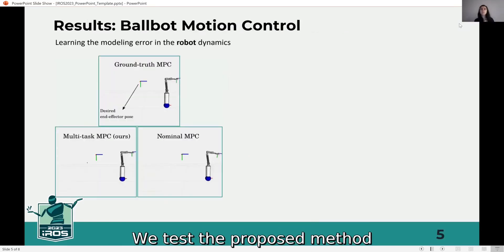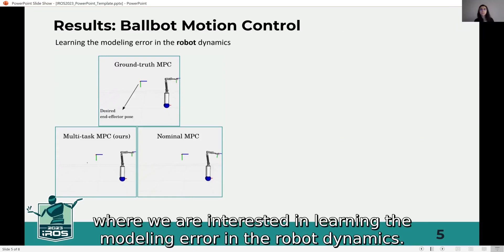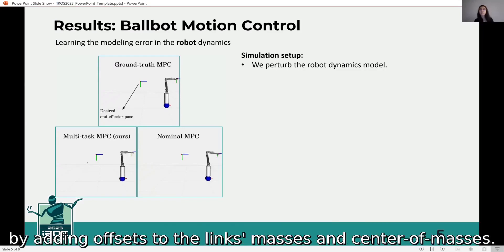We test the proposed method in the motion control problem of a ballbot, where we are interested in learning the modeling error in the robot dynamics. In our simulation setup, we perturbed the robot dynamics model by adding offsets to the link's masses and center of masses.